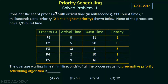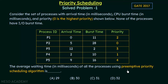Here is the problem. Consider the set of processors with arrival time given in milliseconds, CPU burst time given in milliseconds, and priority where zero is the highest priority. None of the processors have IO burst time.